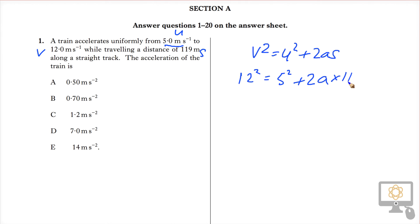To rearrange that now, we're going to do 12 squared minus 5 squared equals all of this. So 12 squared minus 5 squared equals 2 times a times 119.